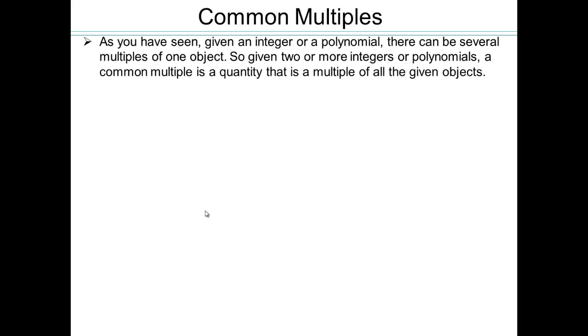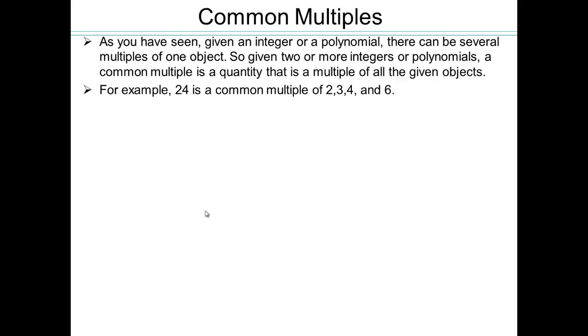Now that we know what multiples are, let's look at two or more terms and look for common multiples. As we showed before, when you have an integer or polynomial, there can be several multiples — infinitely many, in fact. So if you have two or more integers or polynomials, you can have multiples of them. But what we want to know is, can we have a common multiple?